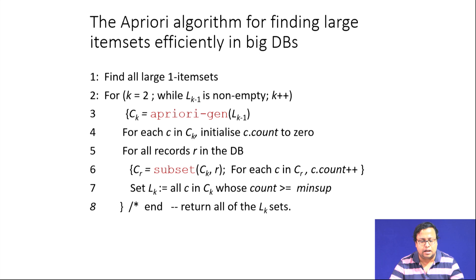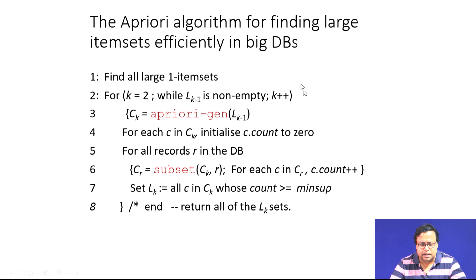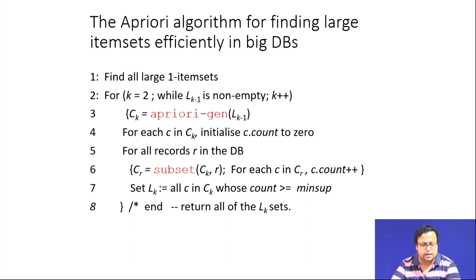With minimum support at 10 percent, the a priori algorithm finds large item sets efficiently in big databases. The algorithm first finds all large one-item sets — meaning items occurring at least 10 percent of the time given that cutoff. Then for K equal to 2, while L(K-1) is non-empty, increment K. When L(K-1) is non-empty — meaning it does not meet the 10 percent threshold — increase K; otherwise keep K as is.